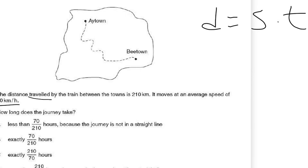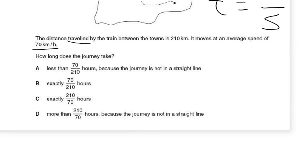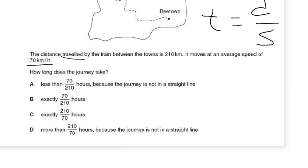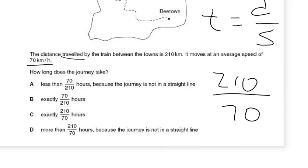Using the formula distance = speed × time, we rearrange to get time = distance ÷ speed. So time = 210 km ÷ 70 km/h, which gives us 210 divided by 70. That expression is the correct answer for this problem.